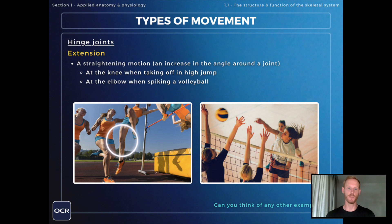Extension is the opposite movement — a straightening motion that results in an increase in the angle around a joint. At the knee this can be seen when taking off in high jump, or jumping in any sport, and at the elbow when spiking a volleyball.